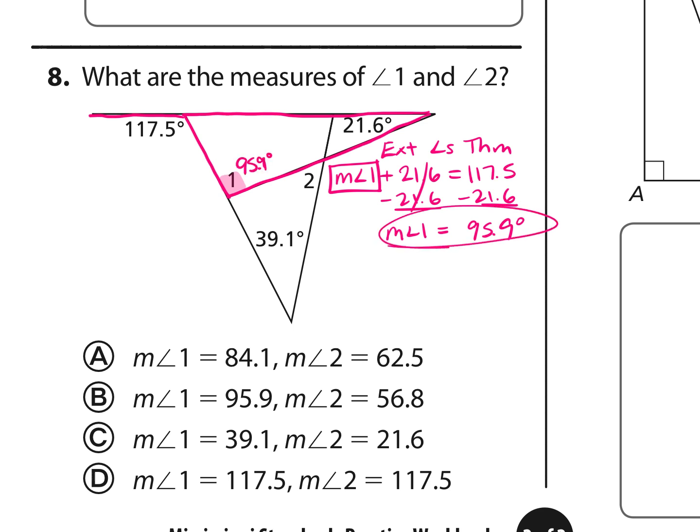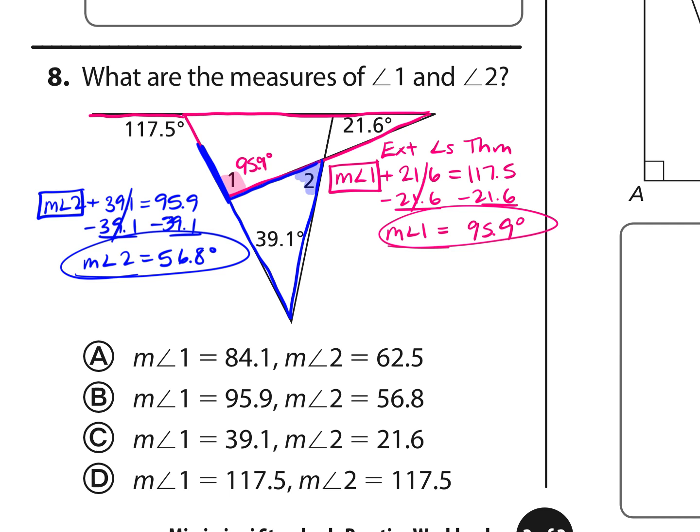Now angle 2 also uses a triangle. I'm looking for angle 2 here. But I do notice a triangle that it's within. It's an interior angle as is 39.1. And if I extend this side of that triangle, I get this angle that's 95.9 degrees as an exterior angle that we just found. So we say that the measure of angle 2 plus 39.1 equals 95.9 degrees. We want the measure of angle 2 by itself. So we'll subtract 39.1 from both sides. And we find that the measure of angle 2 is equal to 56.8 degrees. And so this matches answer choice B.